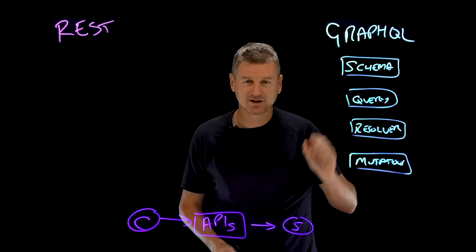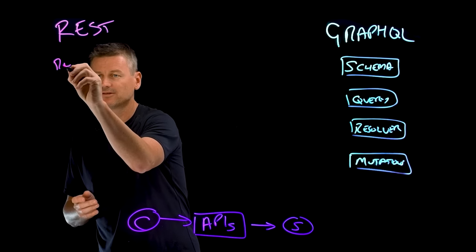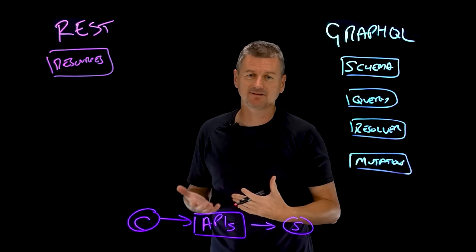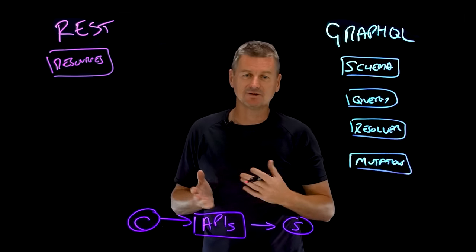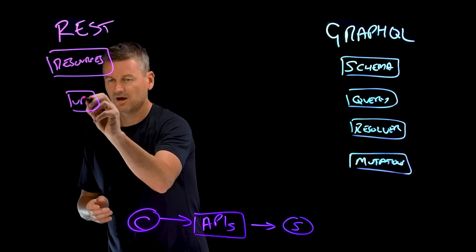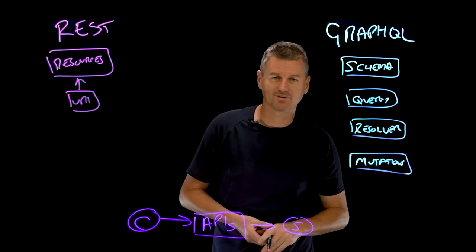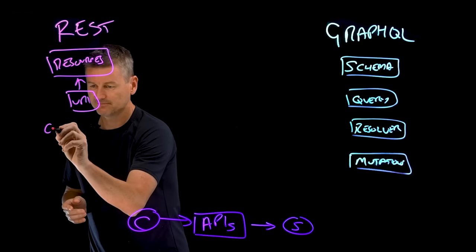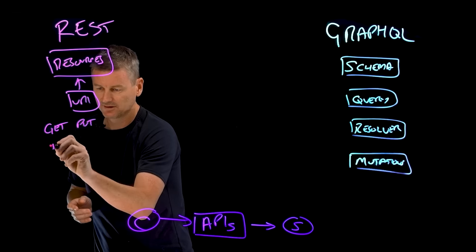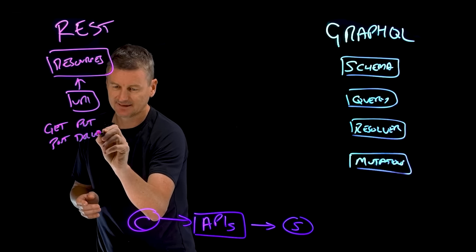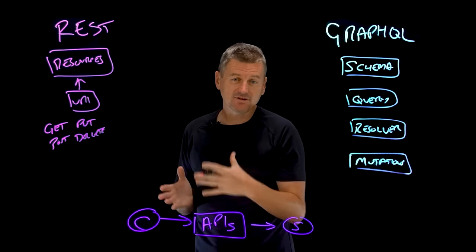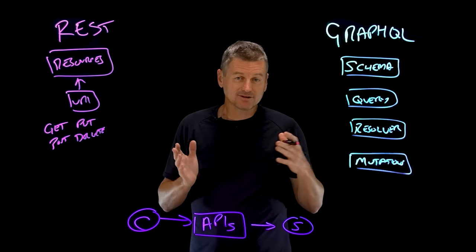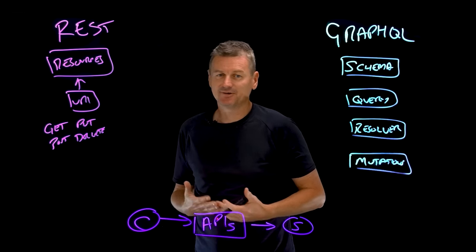So that's GraphQL. Looking at REST, resources are the fundamental concept. Each resource has a unique identifier called a URI — a Uniform Resource Identifier. A client can request a response using an HTTP method: get, put, post, and delete, and that gets us access to those resources. The server responds with a representation of the resource in a format like JSON or XML. REST also allows clients to filter, sort, and paginate the data using query parameters.